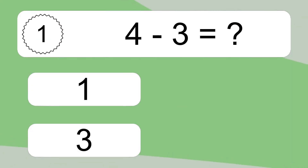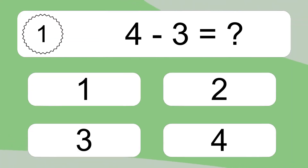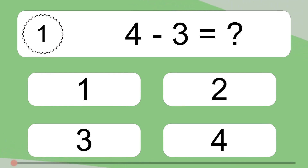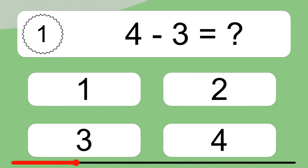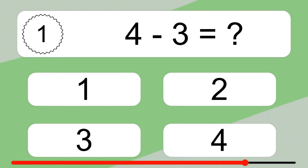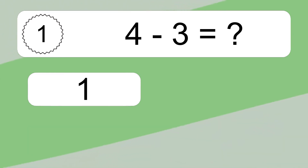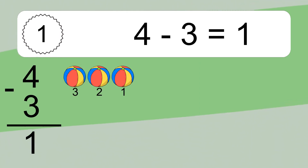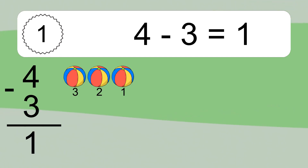4 minus 3 equals what? 4 minus 3 equals 1. Let's count it. 3, 2, 1.